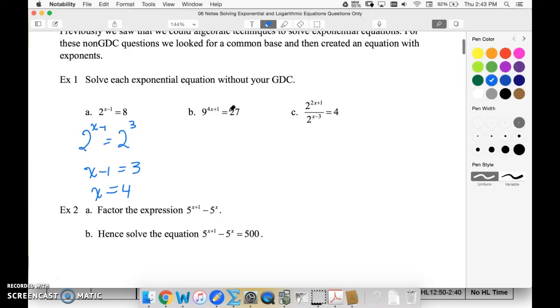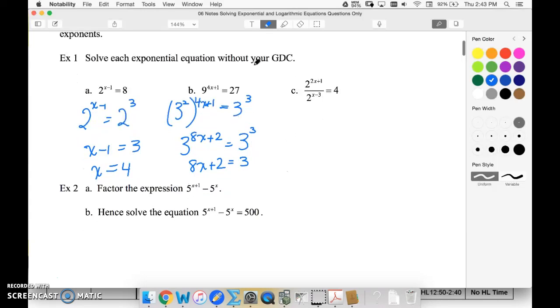There's no way for me to write 27 as base 9, so I'm going to change both of these to base 3. So 27 is 3 to the 3rd, 9 is 3 squared, but I had 9 to this power. My exponent rules tell me to multiply these, so 3 to the 8x plus 2 equals 3 to the 3rd. Again, to be equal, the exponents must be equal. 8x plus 2 must equal 3. This means x is going to be equal to 1/8.